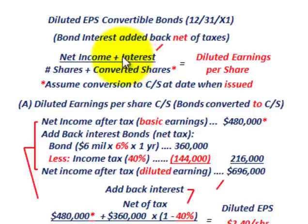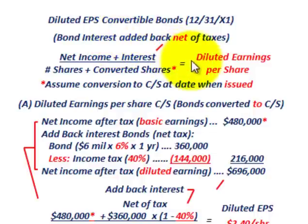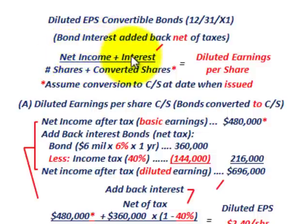The interest that must be added back to net income is because during the year, net income already included a deduction for bond interest expense. For diluted EPS purposes, we assume those bonds were converted at the beginning of the year. If that's the case, then the bond interest that reduced net income has to be added back — because if bonds were converted, they wouldn't have been outstanding and there would be no bond interest. However, it must be added back net of taxes.